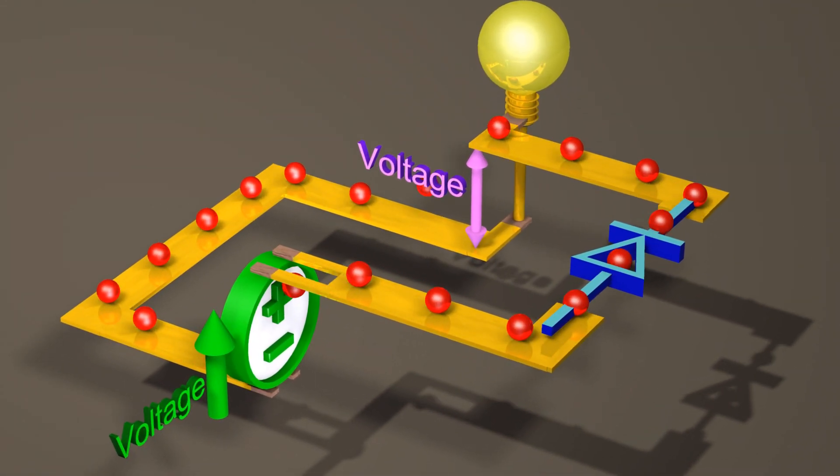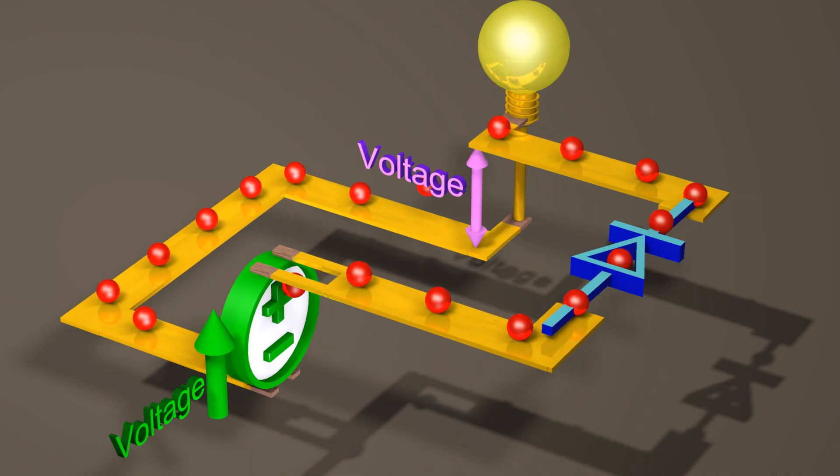When a diode allows current to flow in the forward direction, the diode has a very small voltage drop across it.